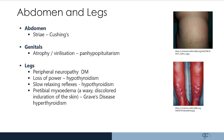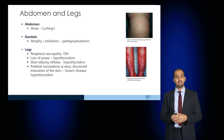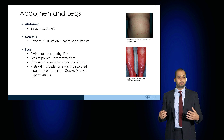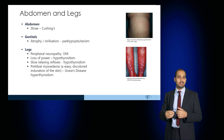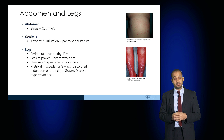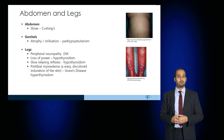Examine the abdomen and the legs. Striae may suggest Cushing's disease. Genital atrophy or virilisation can occur due to panhypopituitarism, and observe for signs of peripheral neuropathy as a consequence of diabetes mellitus. Loss of power in the legs may be as a result of hypothyroidism, as will slower-relaxing reflexes. Pre-tibial myxedema, demonstrated here, is a waxy discolouration and induration of the skin, and this is associated with Graves' disease or hyperthyroidism. Thank you for attending this Medicine Masterclass.